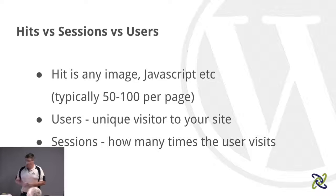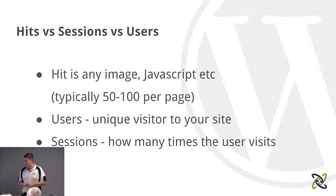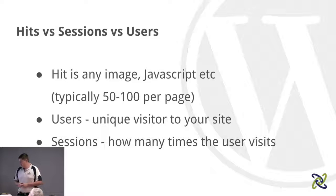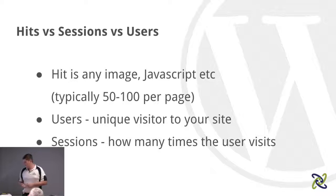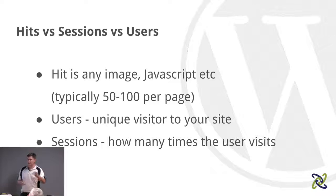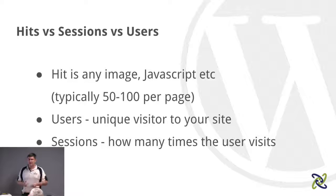In old terminology, a lot of people measured their website by the amount of hits — a great way to inflate numbers, since a hit measures any request to the server. If you've got 100 images loading, that generates 100 hits every time somebody loads the page. Google tends to talk about sessions and users. Users are essentially unique visitors — a cookie gets stored on their machine — and sessions are how many times that user came back and loaded the site.